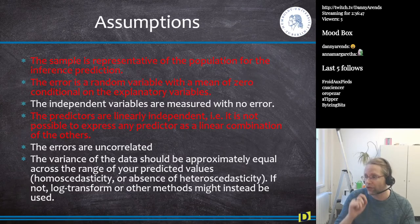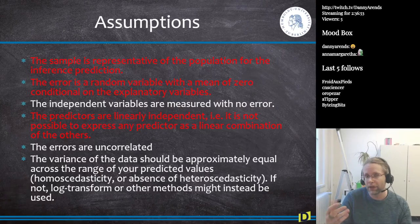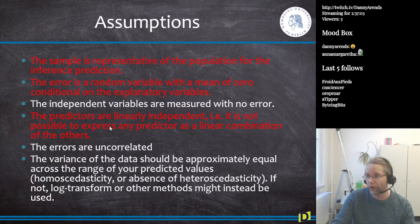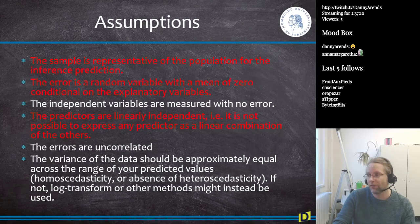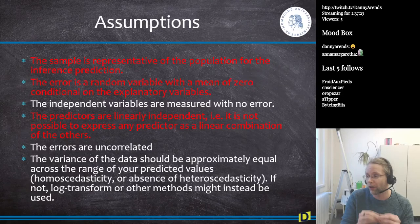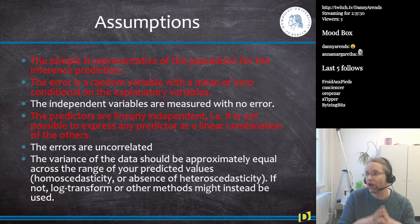The assumptions highlighted in red are the ones to check if you are ever reviewing a paper with a regression model. The first one — representativeness — goes wrong the most because people look at their favorite population. They do something in Germany with five hospitals and conclude the drug works, but the population represented by their sample is not humans in general — it's Germans, a distinct subset.